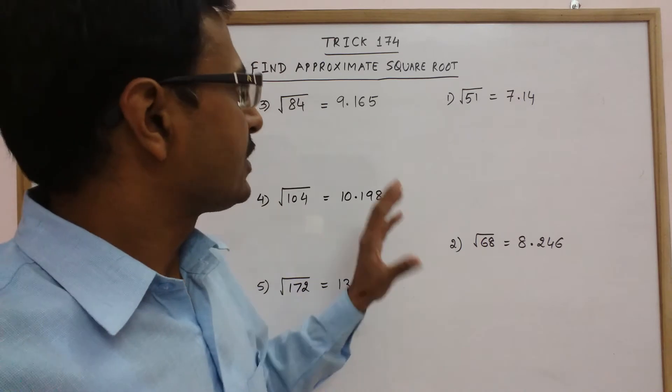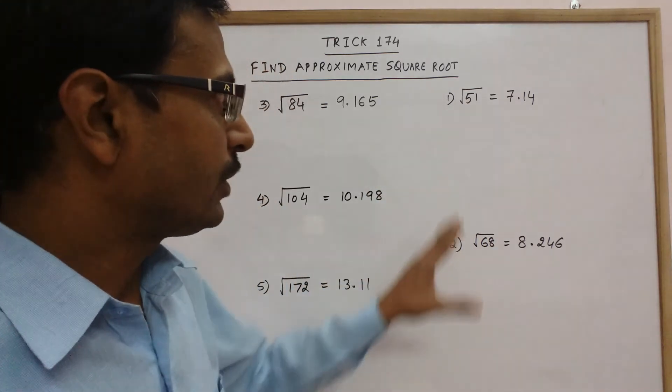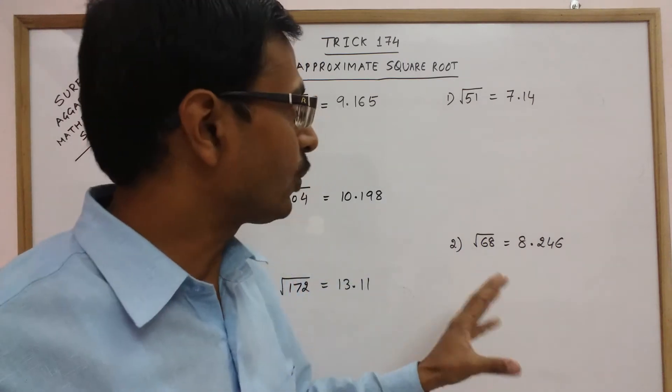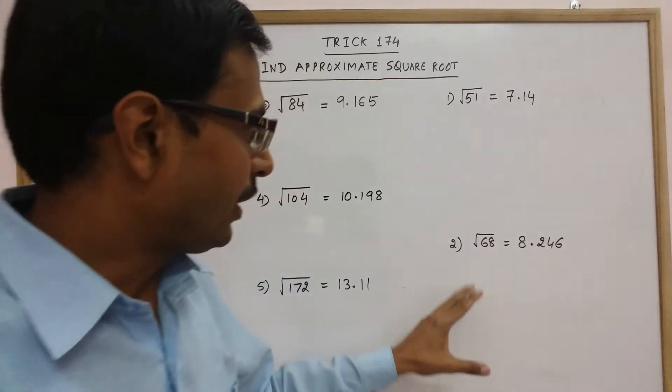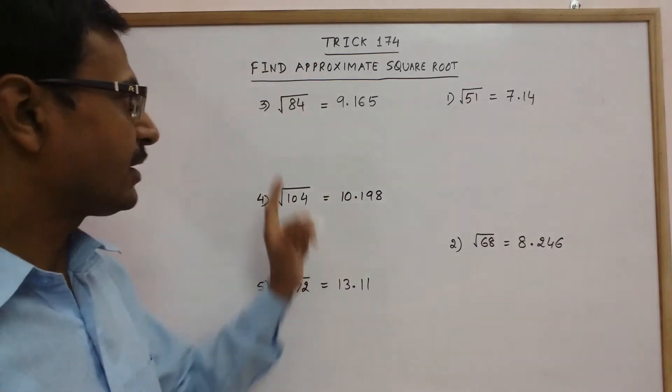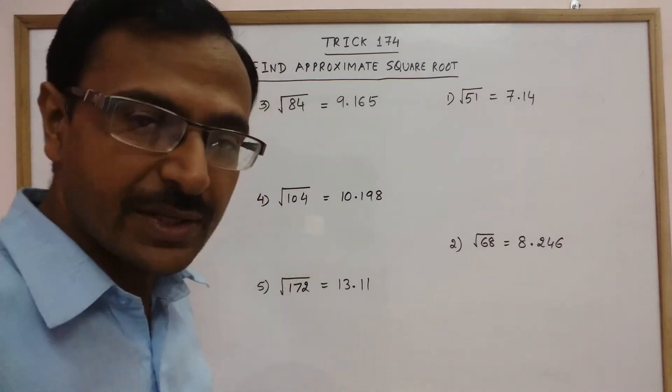Some examples I have already written here on the board just like under root 51, I have already calculated the square root for you, this is 7.14, under root 68, 8.246 and likewise I have three more examples here, under root 84, under root 104, under root 172.